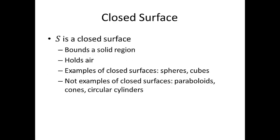A closed surface S is a closed surface if it bounds a solid region in space. One way to think about this is: can it hold air? Examples of closed surfaces include things like spheres or cubes. Things which are not closed surfaces would be, say, a circular or elliptic paraboloid.